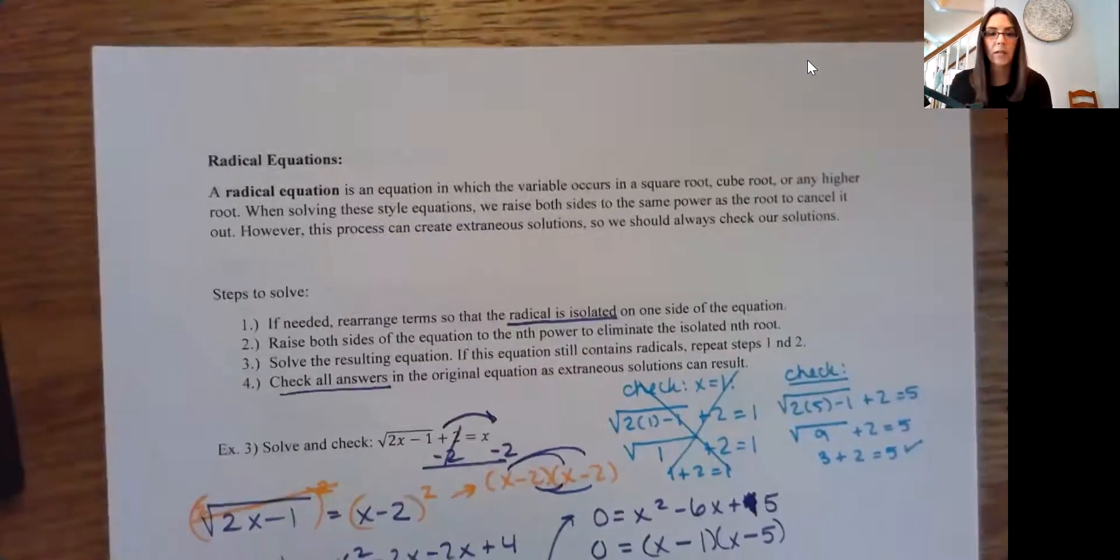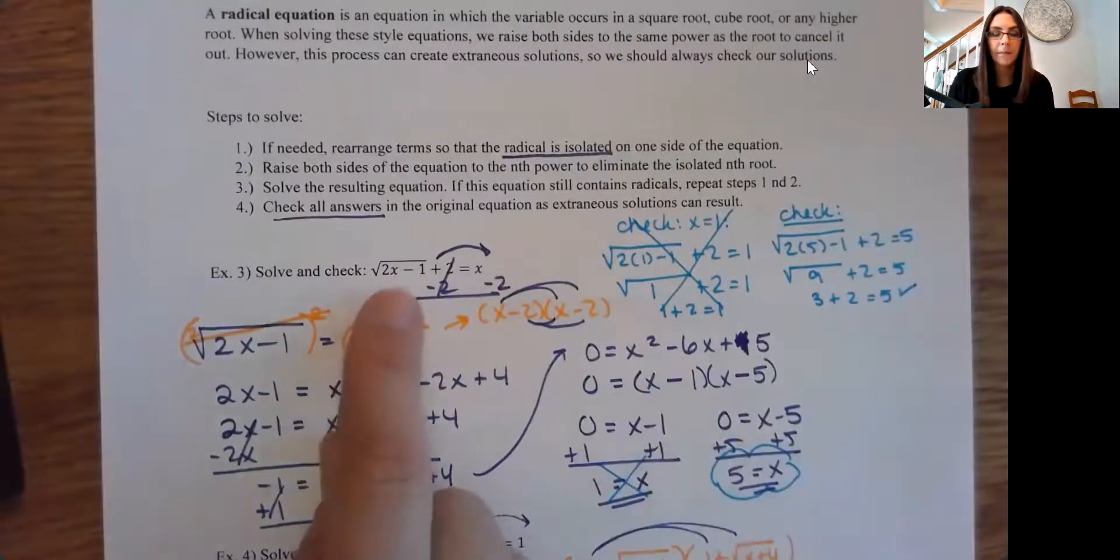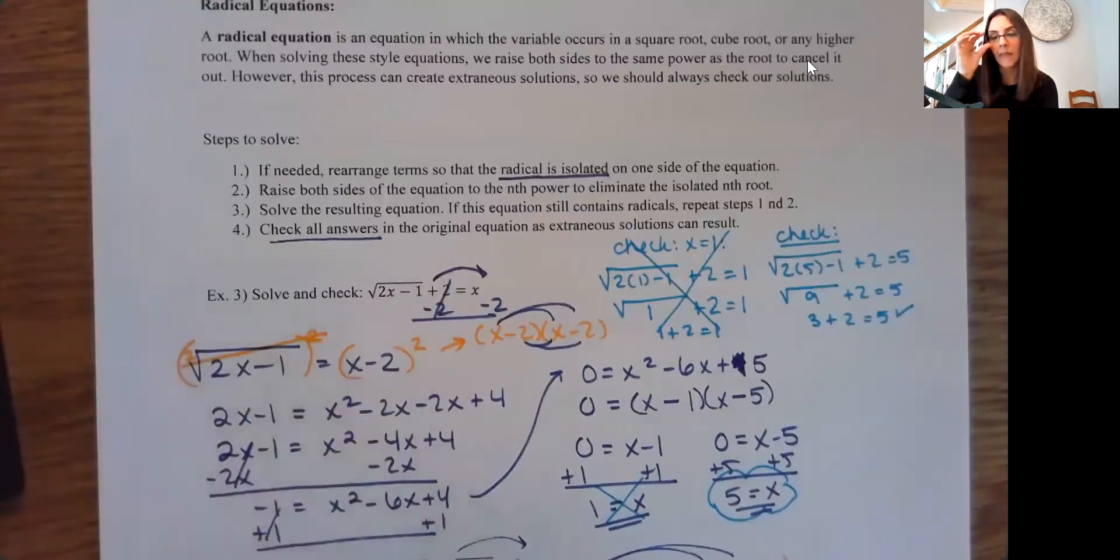The second one we did was radicals. So you had a radical in the equation, and you wanted to clear that radical out. So in this case, you were getting the radical by itself and then raising both sides to a power. You do have to be careful here because that raising to a power idea creates extraneous solutions. So you do want to check your answers for radical problems.